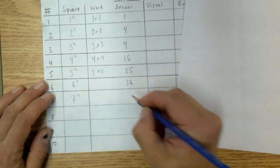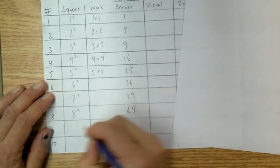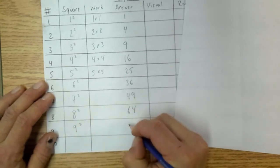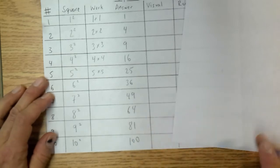7 squared would be 7 times 7 which is 49. 8 squared would be 8 times 8 which is 64. 9 squared would be 9 times 9 which is 81. And 10 squared, 10 times 10 which is of course 100.